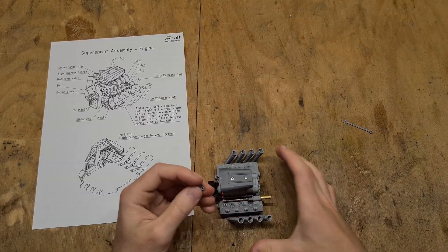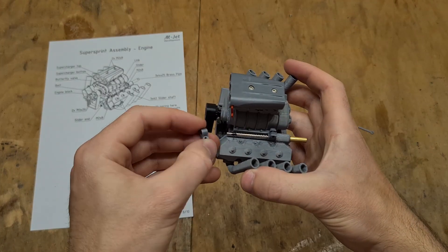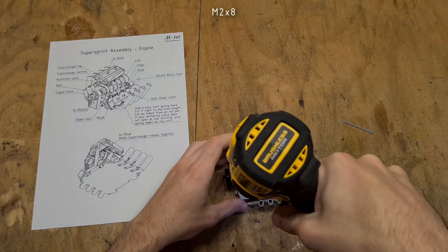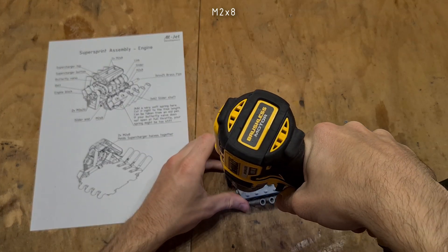Take the slider end and insert it into position. Use one M2x8 to secure it in place.